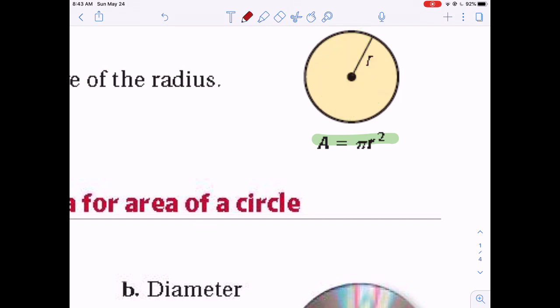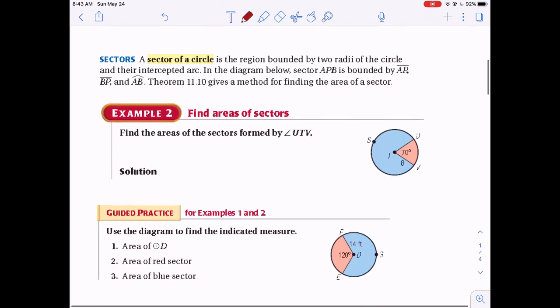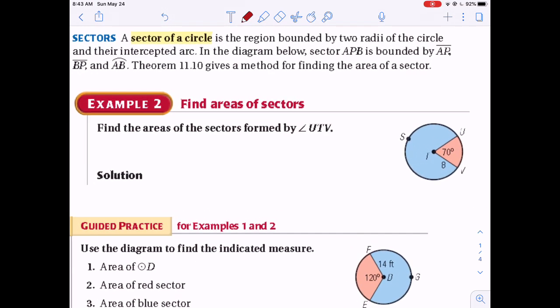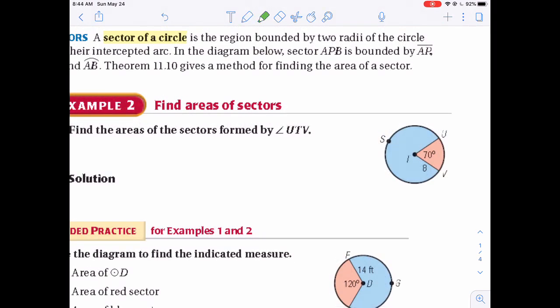So let's go try something with the area and then some sectors as well. Let's find the area of the sector formed by UTV. I want you to find the area of this little orange sector in here. Well, in order to do that, the first thing you must do is you must find the entire area of the whole circle, and then you'll find just that portion that's covered up by the 70 degrees.